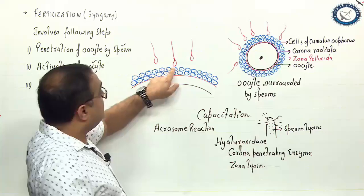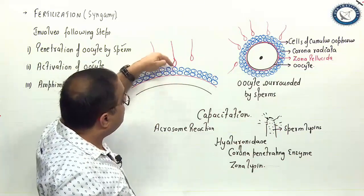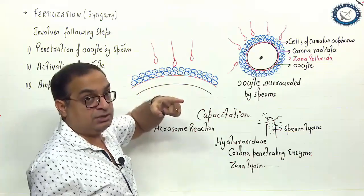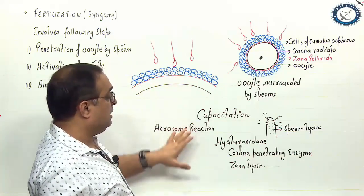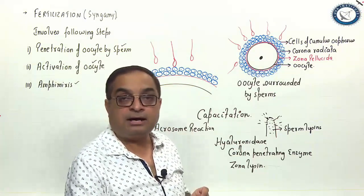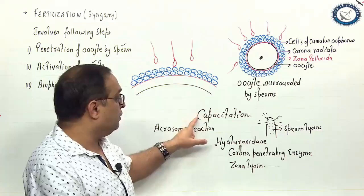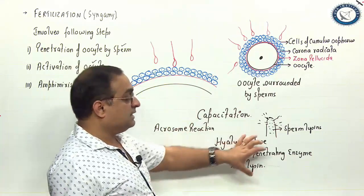When the sperm establishes a contact with the zona pellucida, how will the sperm penetrate through these layers? By drilling action. The moment it establishes a connection with zona pellucida, acrosome reaction happens. Only those sperms can show acrosome reaction which have already undergone capacitation. These enzymes are released.